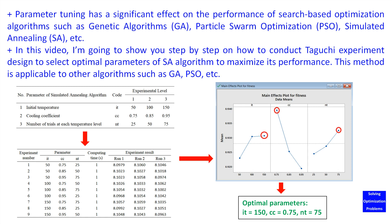In this video, I'm going to show you step-by-step how to conduct a Taguchi experiment design to select optimal parameters of the SA algorithm to maximize its performance. This method is also applicable to other algorithms, such as GA and PSO. Let's see.